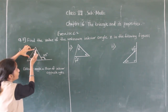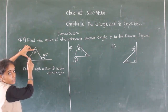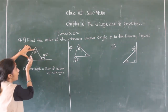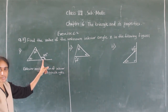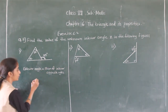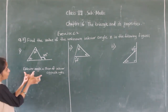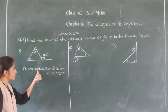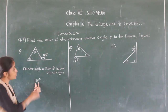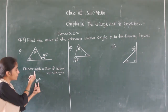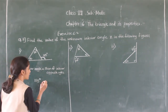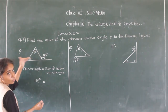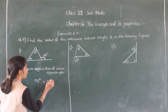The interior opposite angles are the 50 degree angle and x. These are the interior opposite angles. So the exterior angle — this angle — is equal to the sum of the interior opposite angles. Now, the exterior angle given is 150 degrees. So we write: exterior angle 150 degrees is equal to 50 degrees plus x.